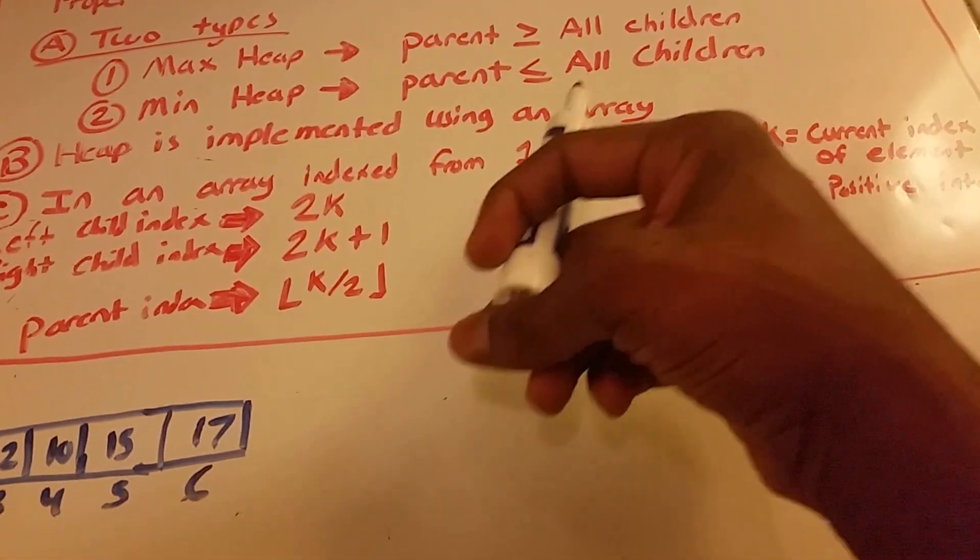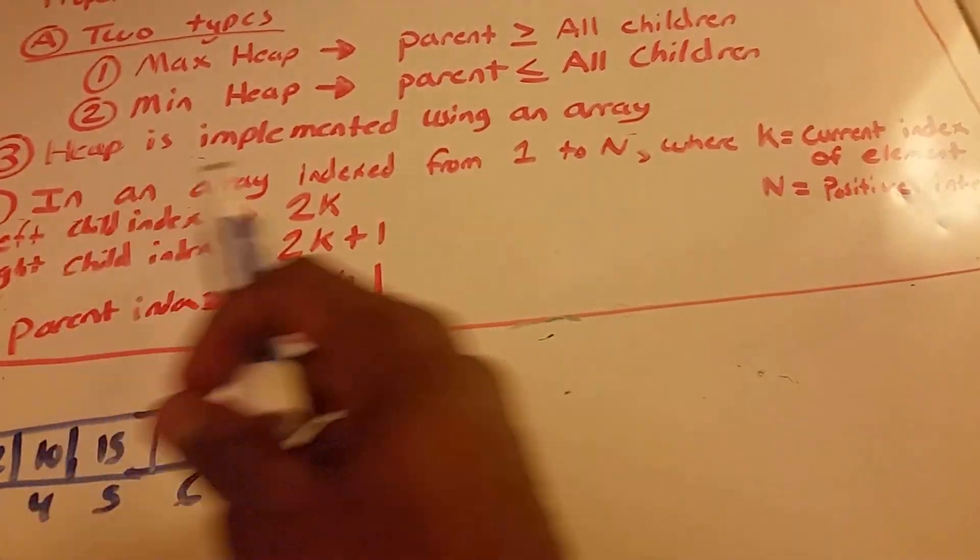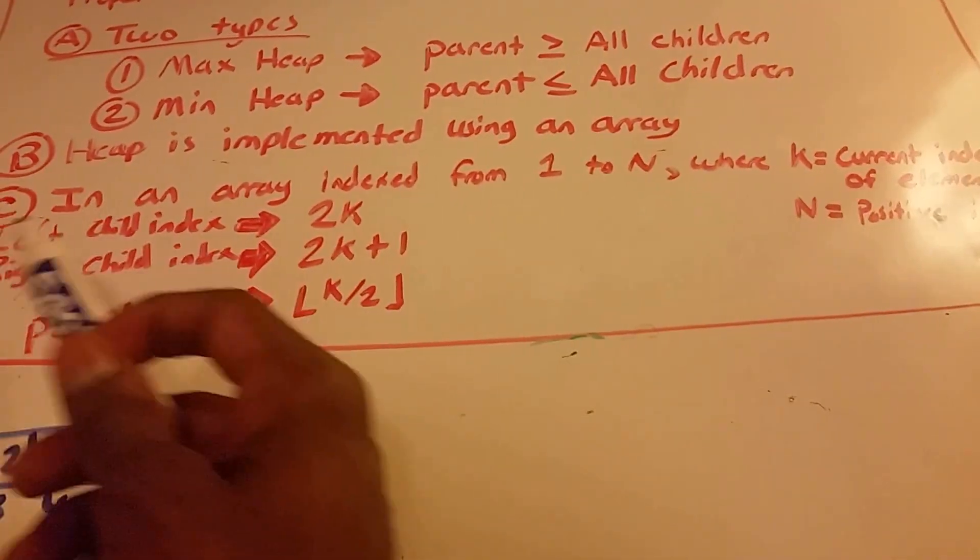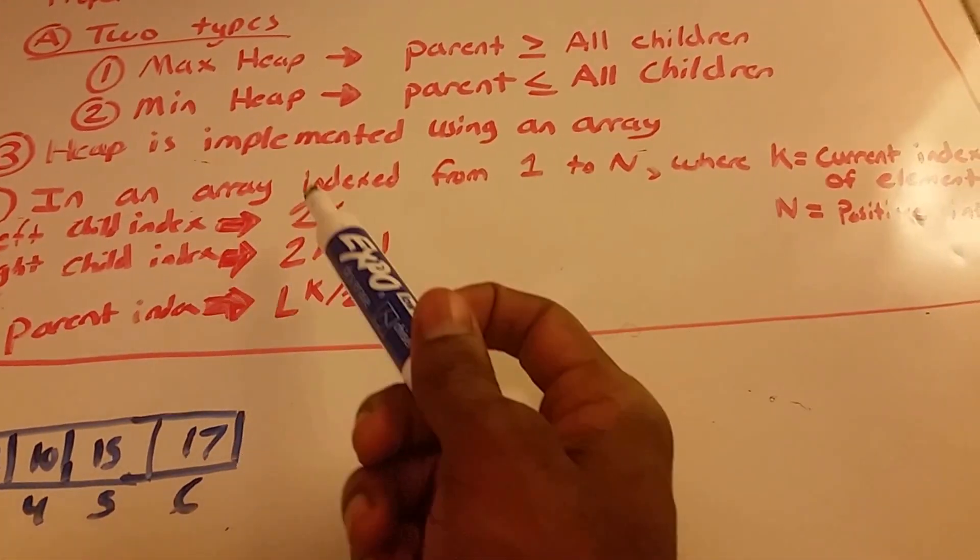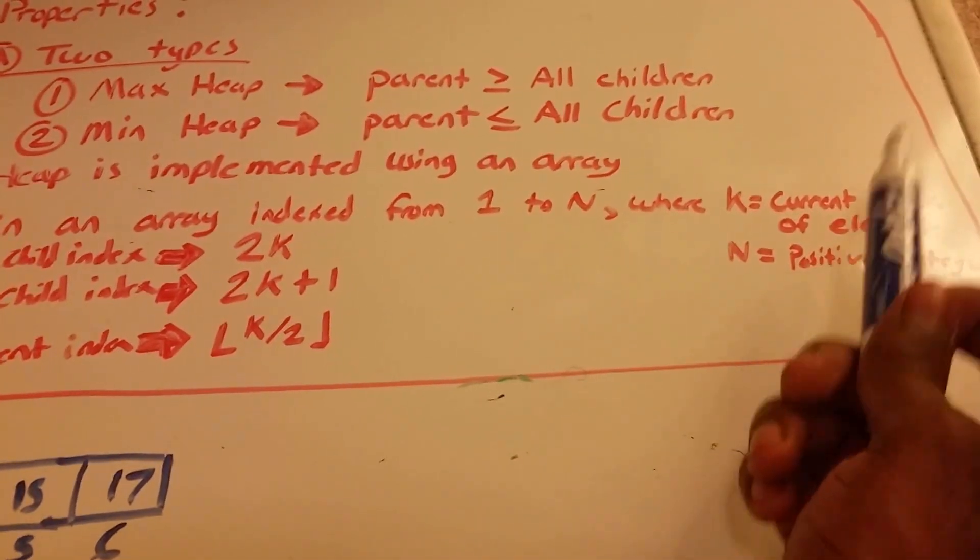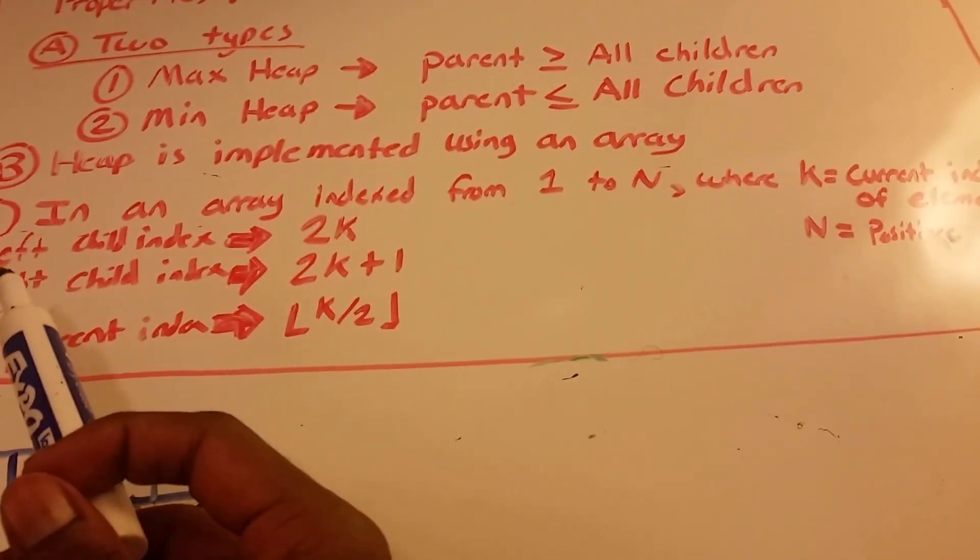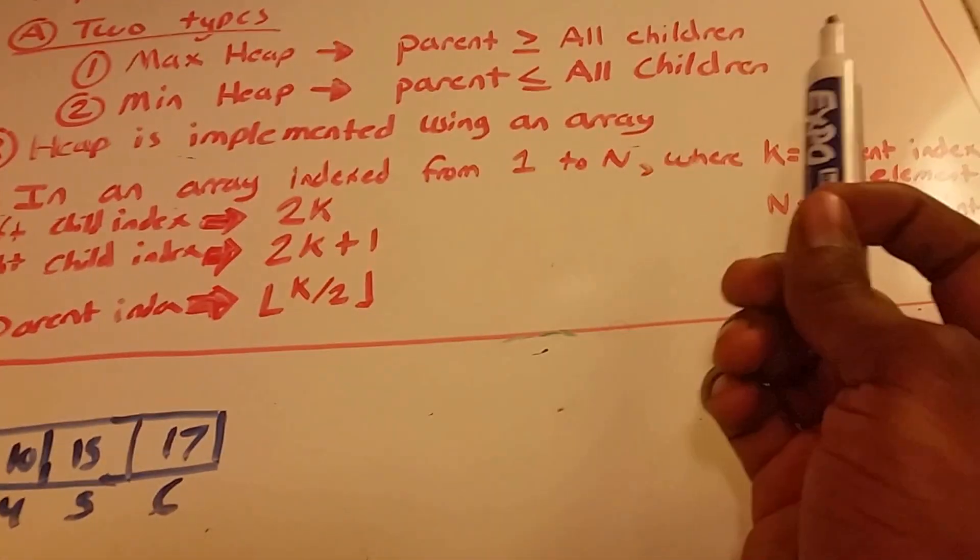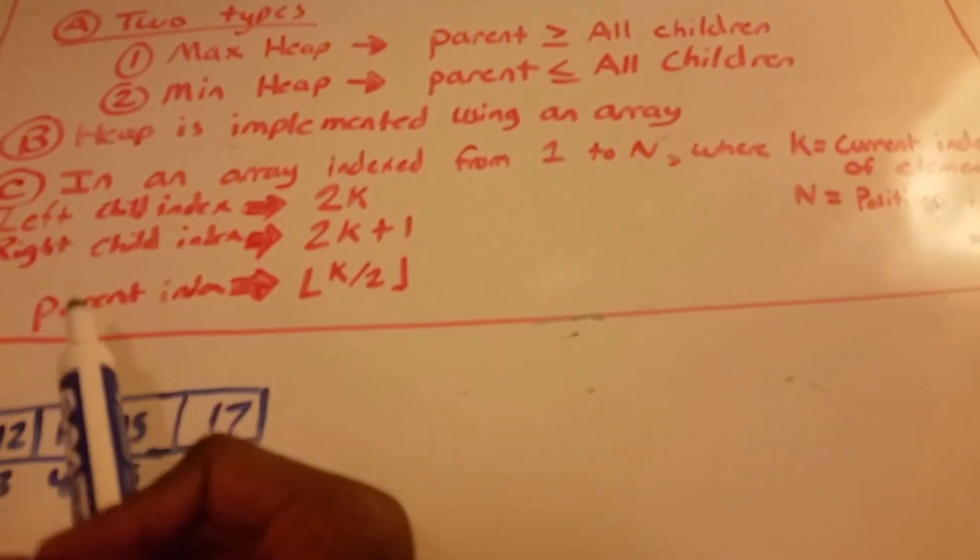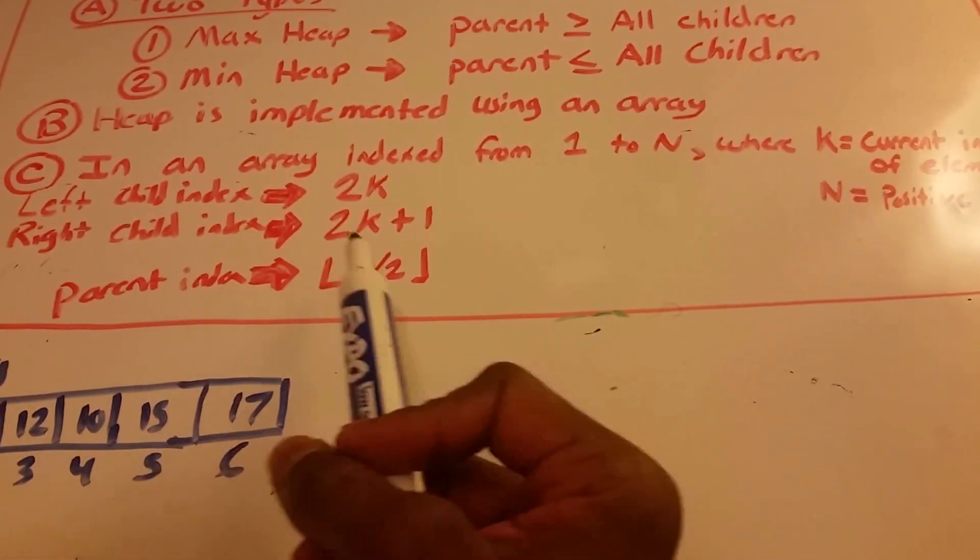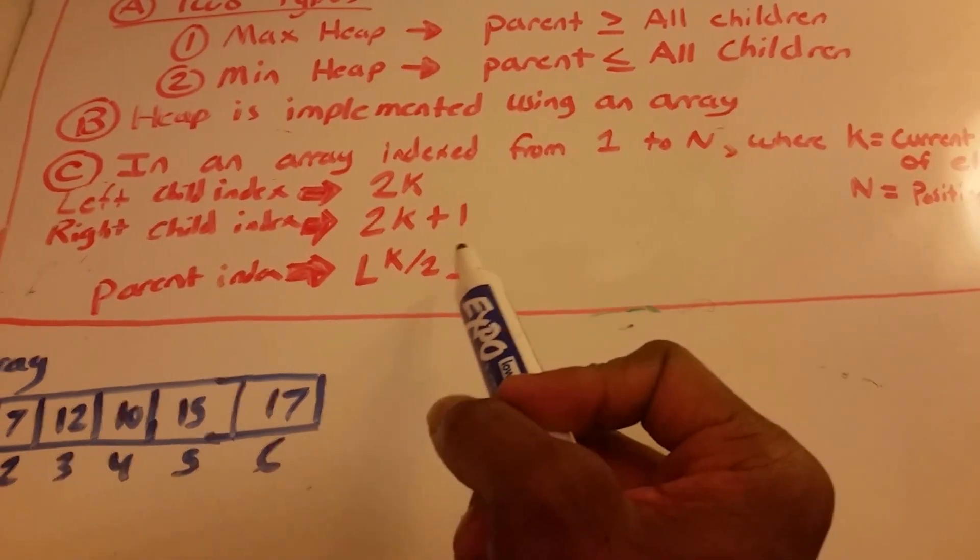A heap is implemented using an array. In an array indexed from 1 to N, where N is some positive integer, the left child index is equal to 2 times k, where k is the current index of the element. The right child index is equal to 2 times k plus 1. And the parent index is equal to k divided by 2, rounded down.